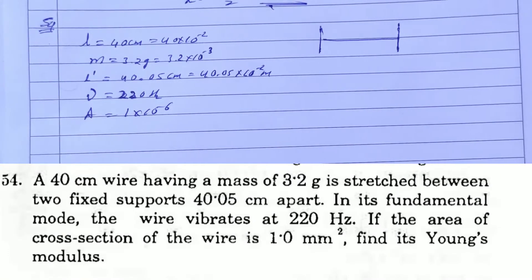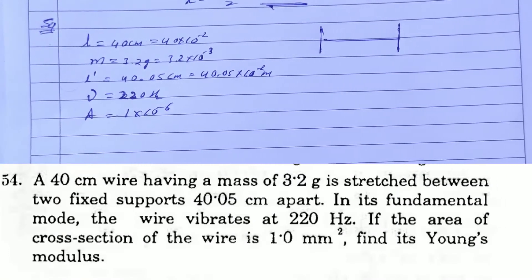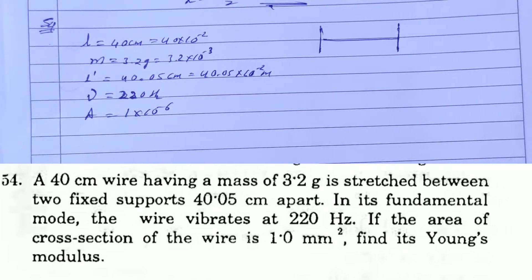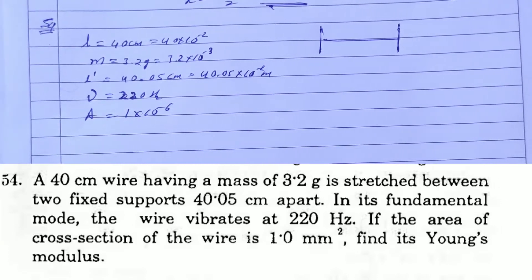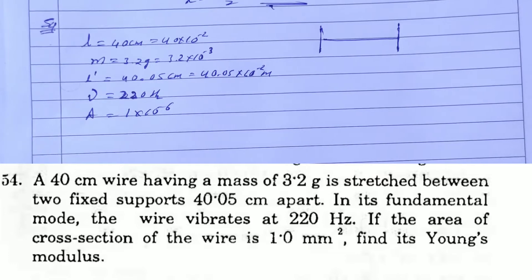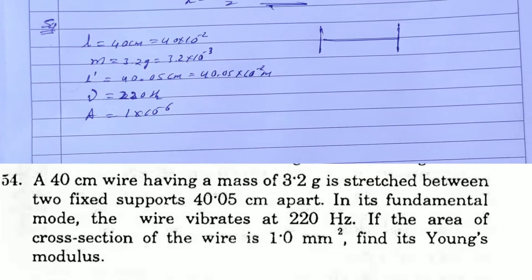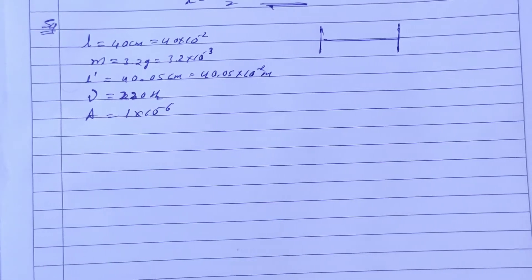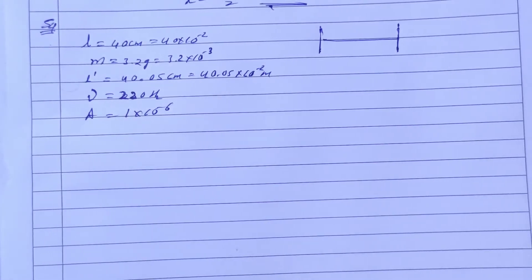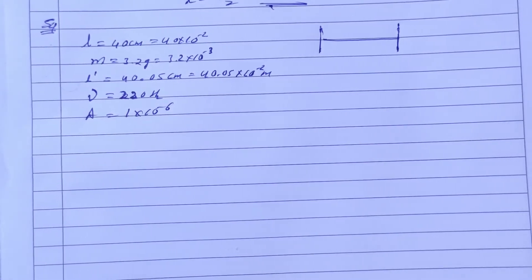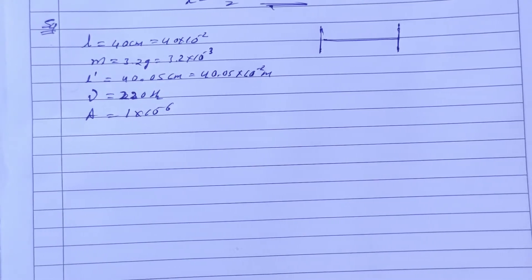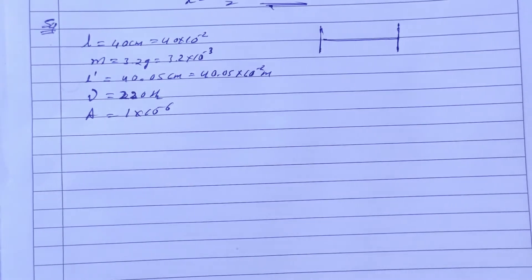HC Verma Solutions, Chapter 15 - Wave Motion and Wave on String, Question No. 54. A 40 cm wire having a mass of 3.2 gm is stretched between two fixed supports 40.05 cm apart. In its fundamental mode, the wire vibrates at 220 Hz. If the area of cross section of the wire is 1 mm², find the Young's modulus.